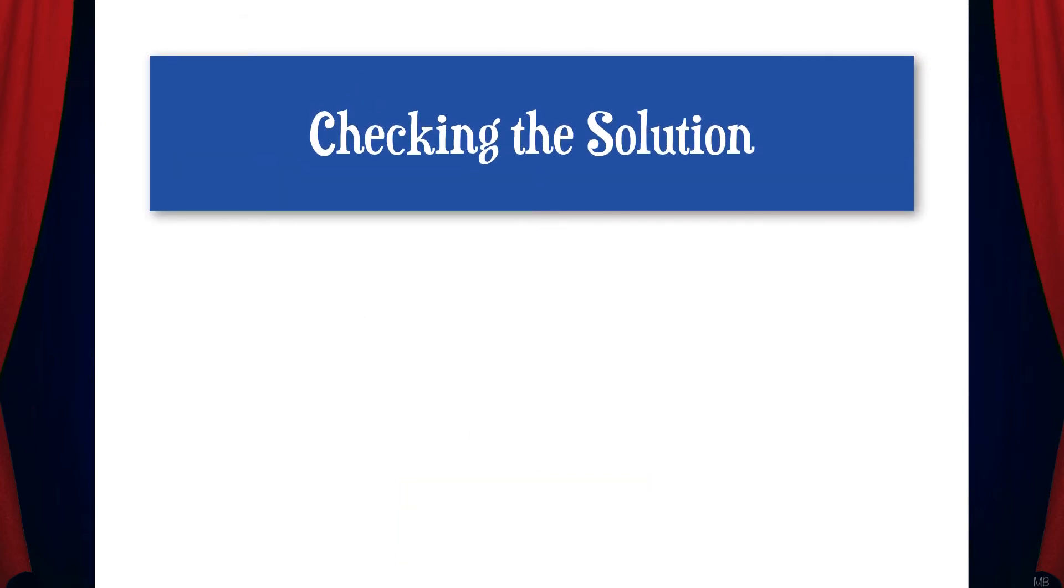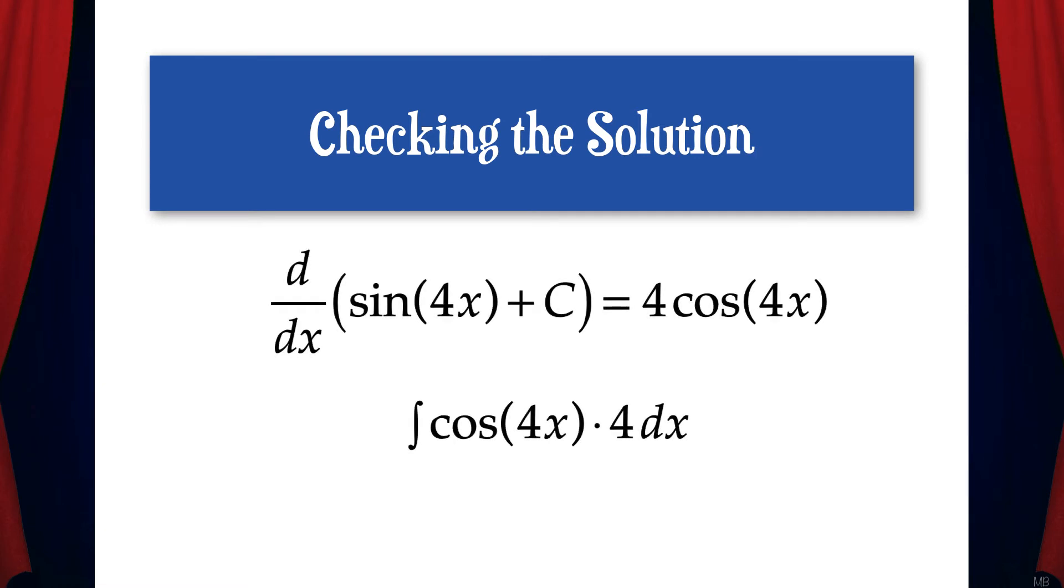Now a quick way to check to see if you've done this right is to take the derivative of the solution and see if you get the integrand. The derivative of sine 4x plus c is cosine 4x times 4. So this confirms that we've found the correct solution to the integral.